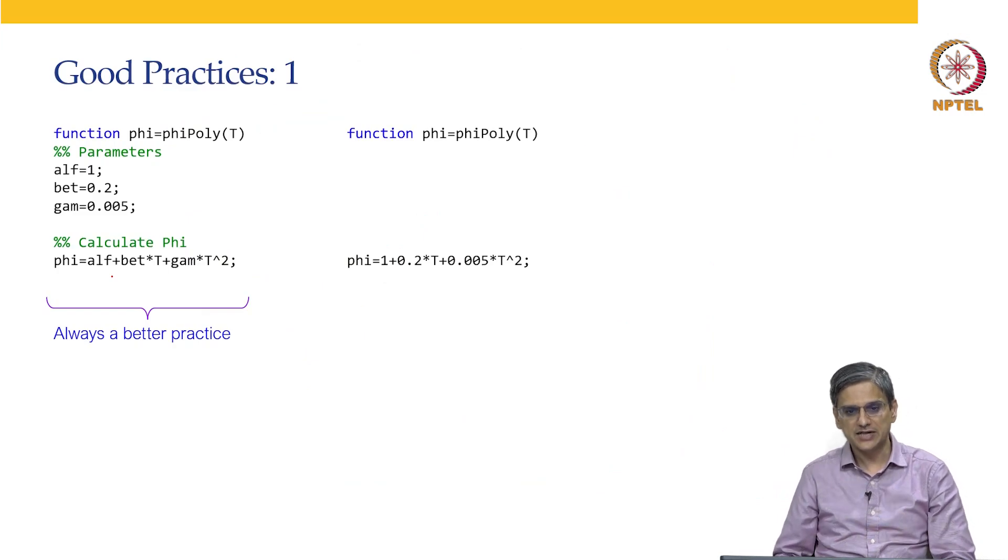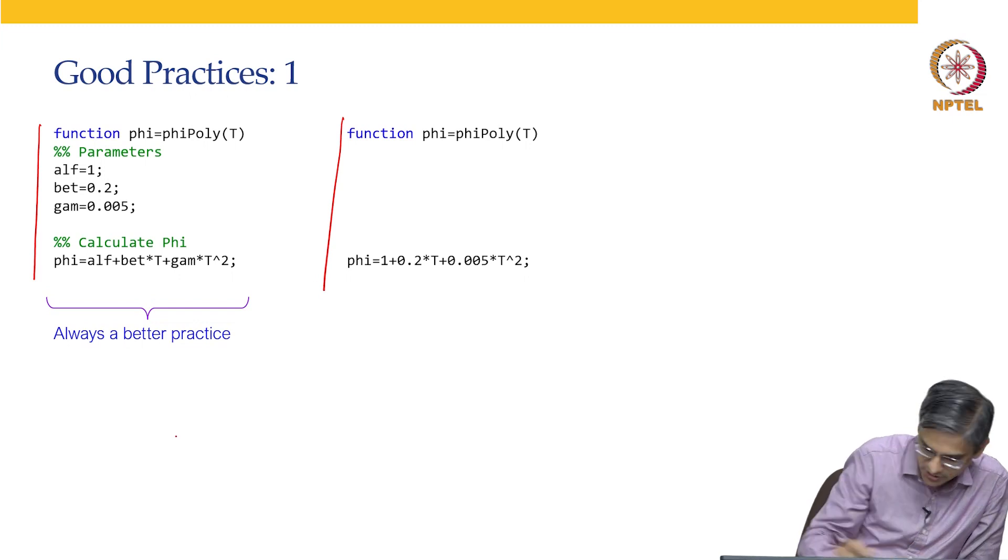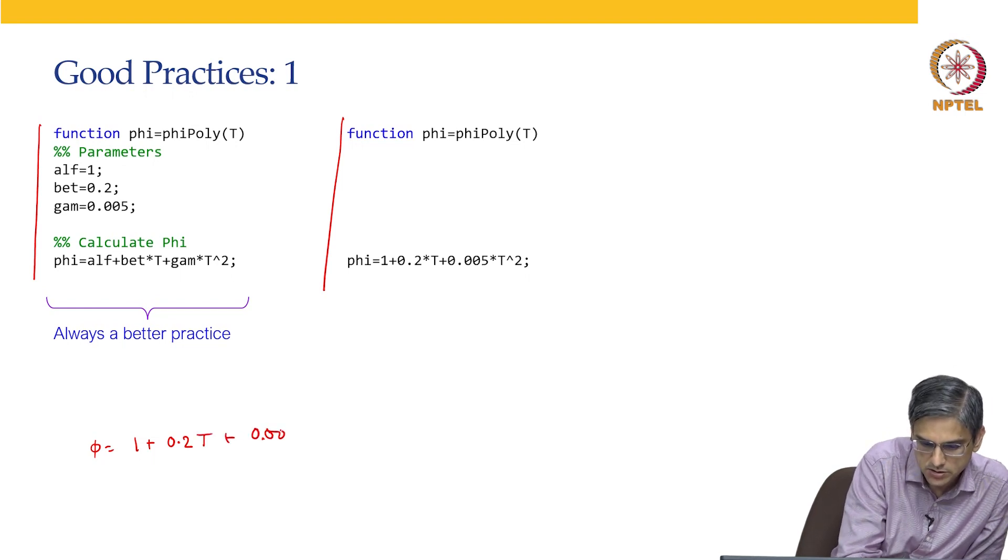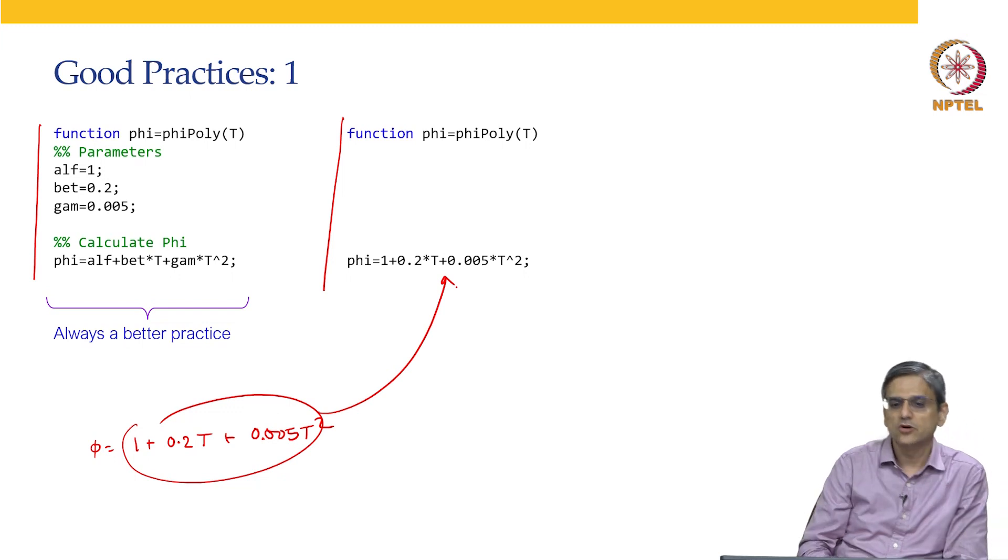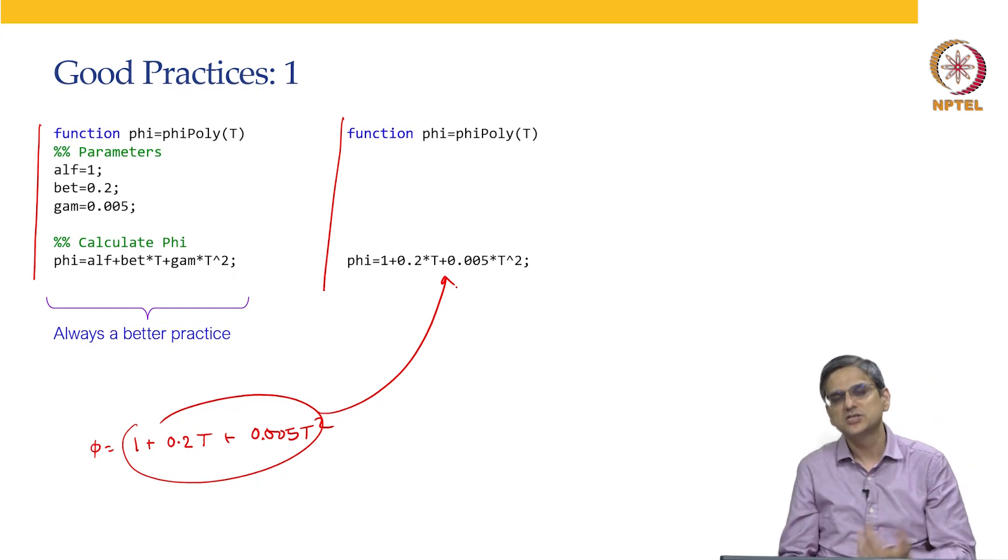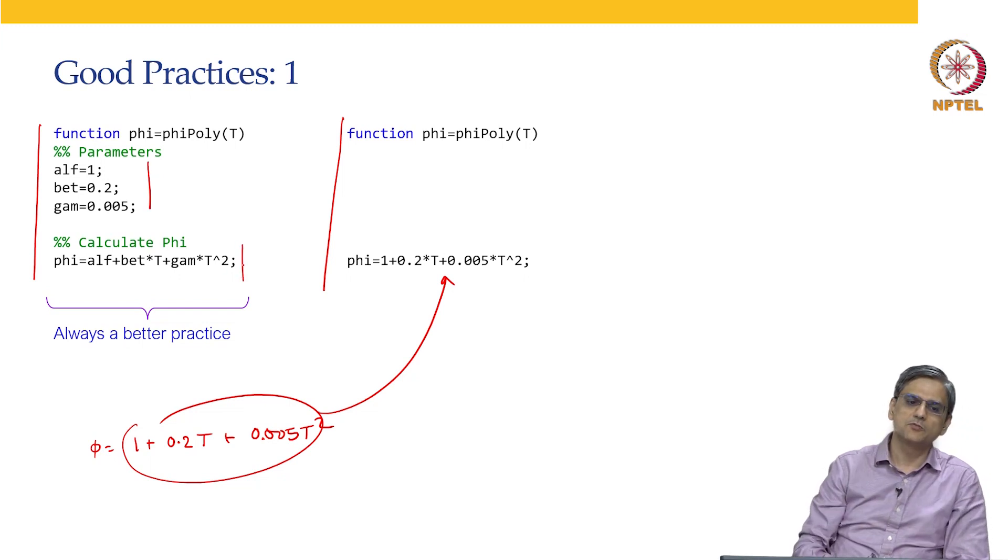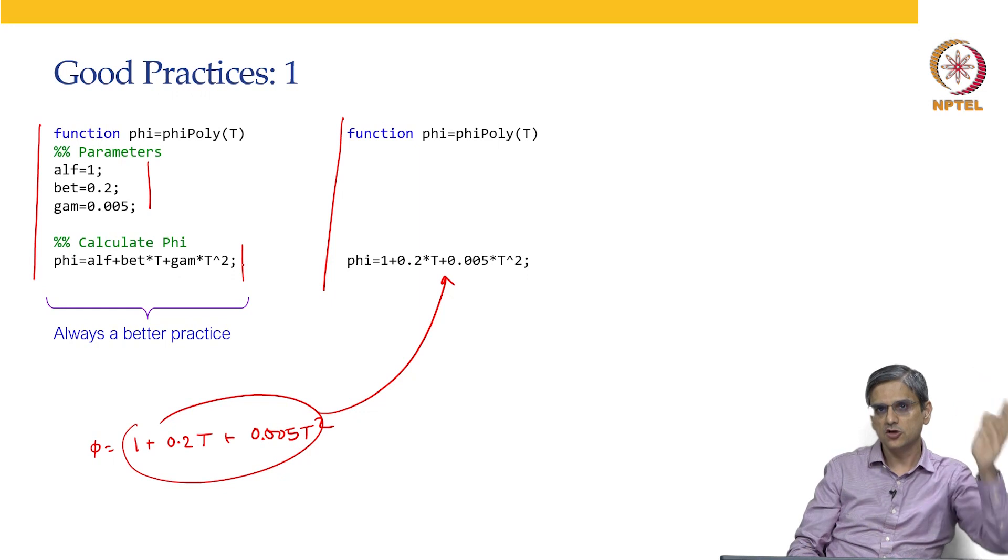The good programming practices, let us talk about this particular function versus a function written over here. In this case, our phi had a simple way, it was 1 plus 0.2 t plus 0.005 t squared. I can very easily put this directly over here. But usually, this is not a very good recommended practice. The reason is that 1 is it is prone to error, 2 is these parameters could change at some point of time. By separating out the input block or the definition block and the computation block, you reduce the chances of making errors. So, always I will recommend between the option number 1 and option number 2, I will always recommend the option number 1.